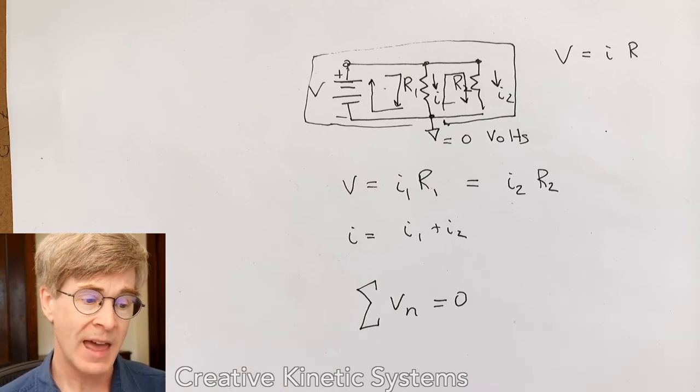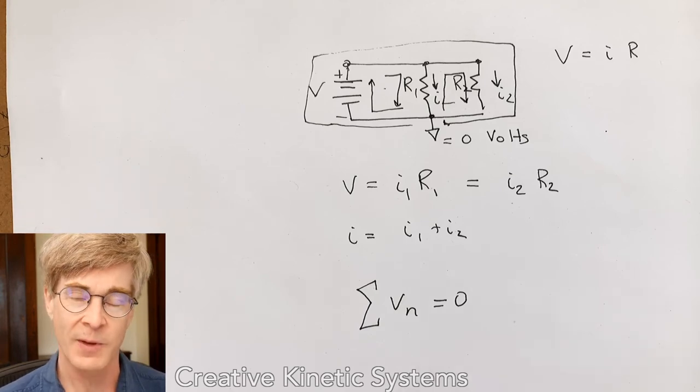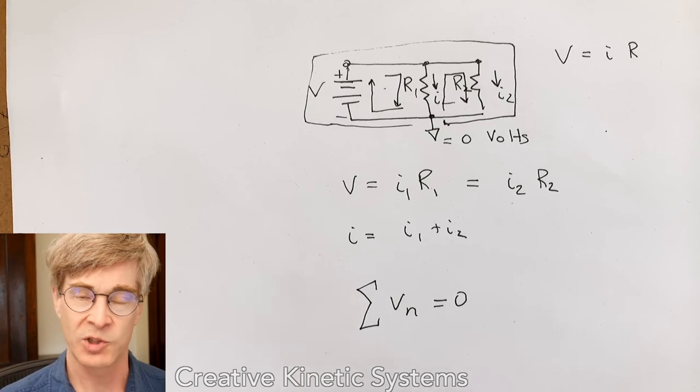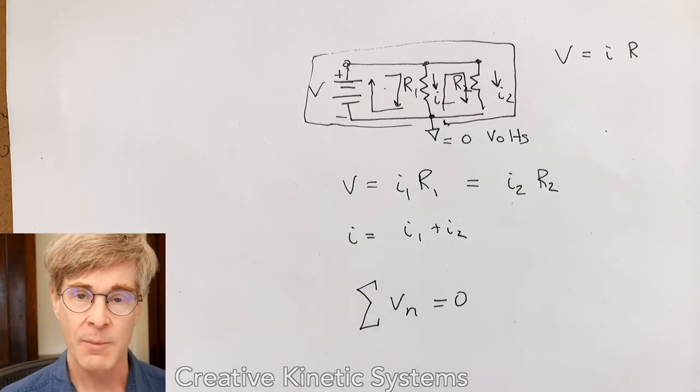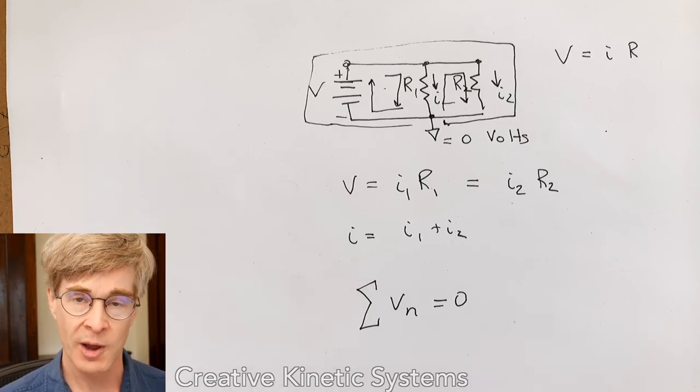Just to follow through on that, one final observation there about measurement is measuring voltages is straightforward for our circuits because you can simply take the meter and probe two points. Measuring currents is always slightly more involved because currents flow through points.